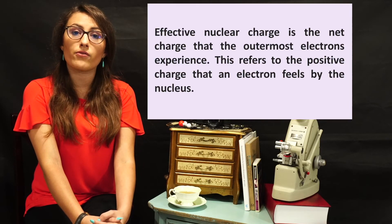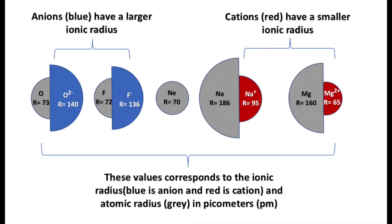Take, for example, the following isoelectronic series: oxide, fluoride, neon, the sodium ion, and the magnesium ion. Each of these atoms has the same number of electrons, but all have differing numbers of protons. Magnesium has the largest number of protons, thus giving it the largest effective nuclear charge and the smallest radius, while oxide has the smallest effective nuclear charge because it has the fewest protons, which results in the largest radius.